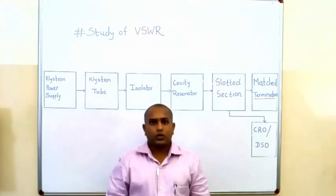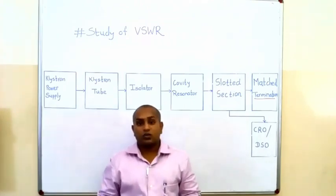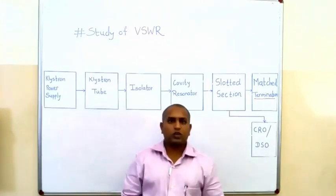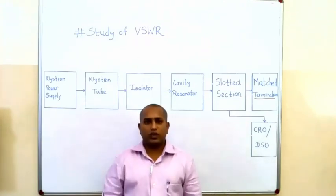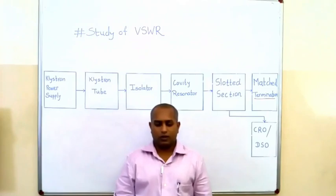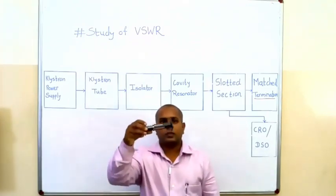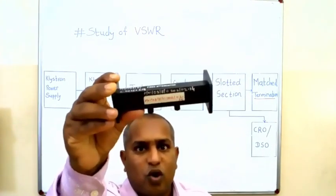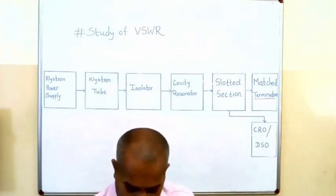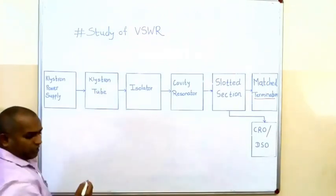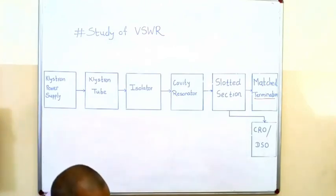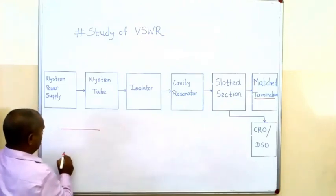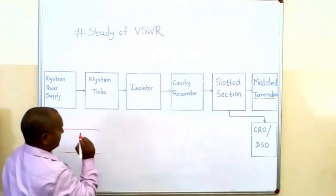Before doing the experiment, you should know the theory related to VSWR. I will explain the theory of VSWR first, and then we will see how to measure VSWR using the slotted line section. Look here — this is your waveguide. If you check the front view of this waveguide, it looks like two lines. I will draw it here: this is your first line and this is your second line.